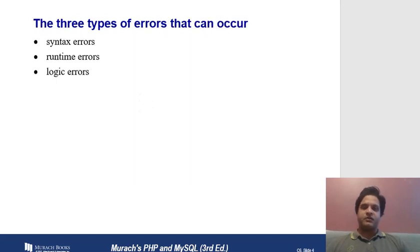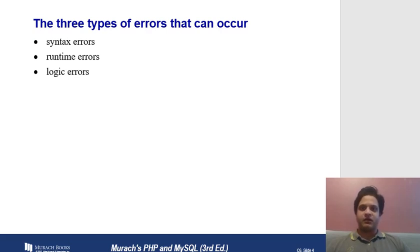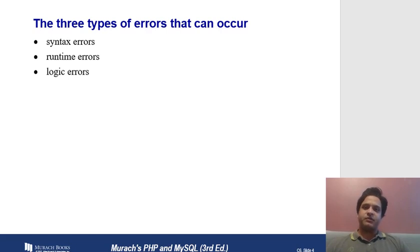Starting with errors — there are three main kinds: syntax errors, runtime errors, and logical errors. Syntax errors occur when you do not follow the syntax of a programming language. Every language has a defined syntax you must follow, otherwise the program won't compile. In PHP, for example, variables start with a dollar sign, and statements must end with a semicolon.